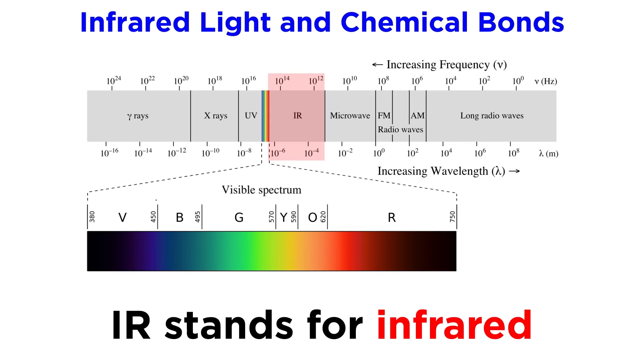The IR in IR spectroscopy stands for infrared, so as one might guess, this technique involves irradiating a sample with infrared radiation. This is the region of the electromagnetic spectrum shown here, the next section lower in energy after visible light.